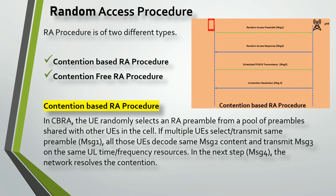Random Access Procedure is basically of two types: Contention Based Random Access Procedure and Contention Free Random Access Procedure. In short, we refer to these as CBRA and CFRA.